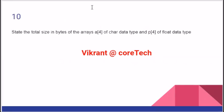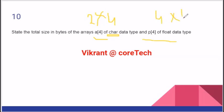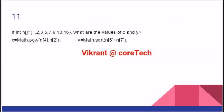State the total size of the array. One int takes 2 bytes, and if there are 4 elements, that is 2 into 4. Similarly, one float takes 4 bytes, so 4 into 4. You need to find the option where the answer is 4 into 4, that is 16.